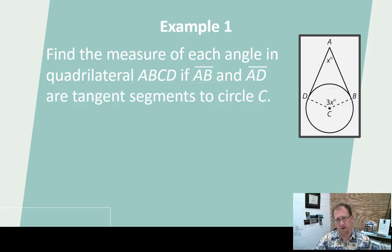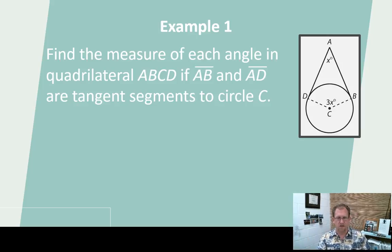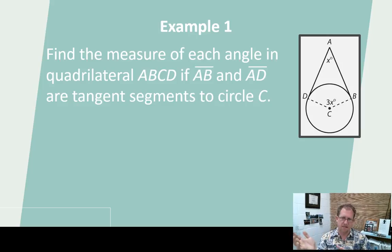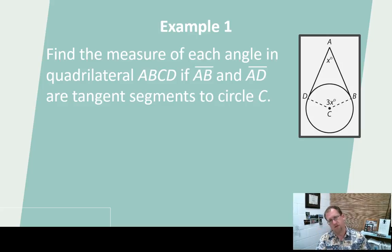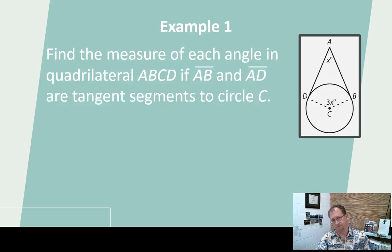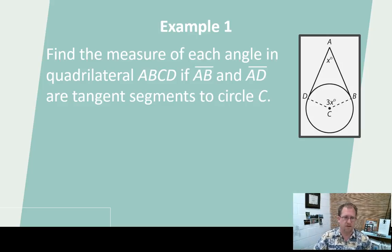It's a quadrilateral, so the sum of the interior angles is 360 degrees. If I want to know X: 360 degrees minus 180 — because I've got those two 90-degree angles at D and B — gives 180 degrees. My two other angles have to add up to the remaining 180 degrees. I have X and 3X, that's 4X. 4X equals 180, so 180 divided by 4 gives X equals 45 degrees.